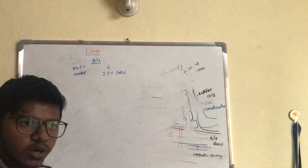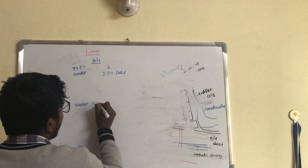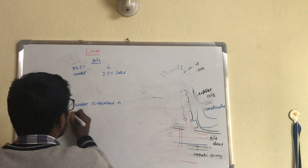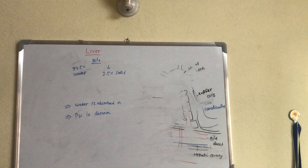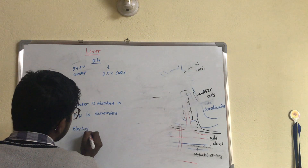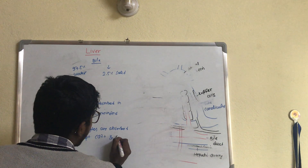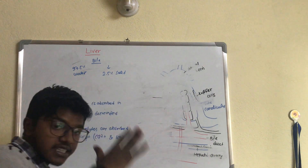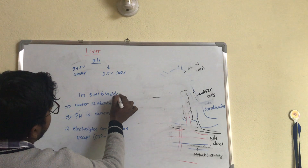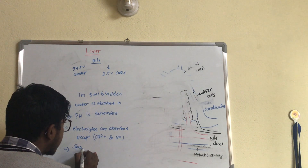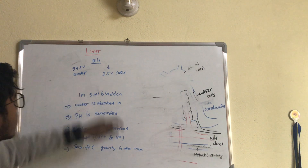Bile is then stored in the gallbladder. In the gallbladder, water is absorbed, pH is decreased, and electrolytes are absorbed — except calcium and potassium, which are not absorbed. The water content decreases so the concentration of other materials increases. The specific gravity is also increased. These are the secondary changes that occur in the gallbladder as it stores bile.